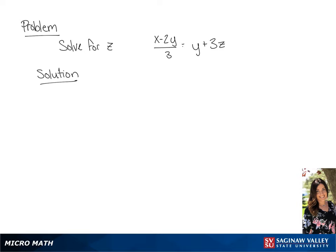We have x minus 2y all over 3 equals y plus 3z. The first thing we're going to do is clear the fraction by multiplying each side by 3. This will give us x minus 2y equals 3y plus 9z.